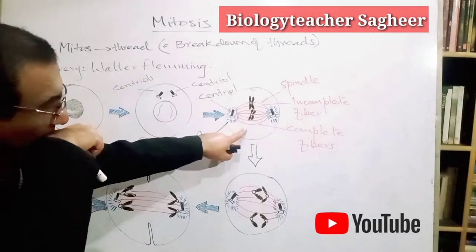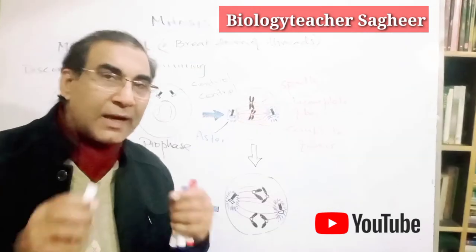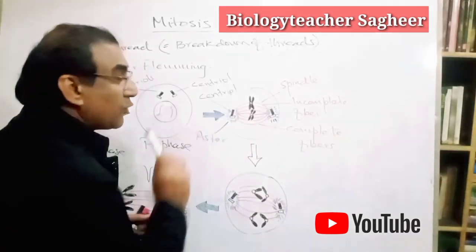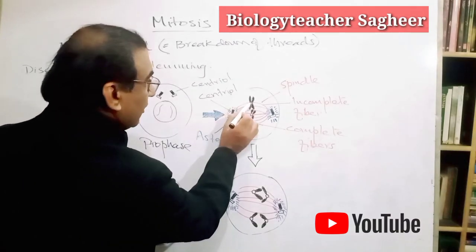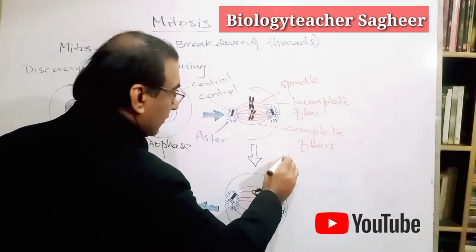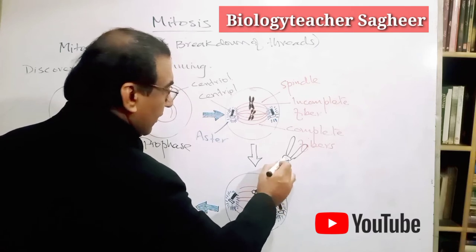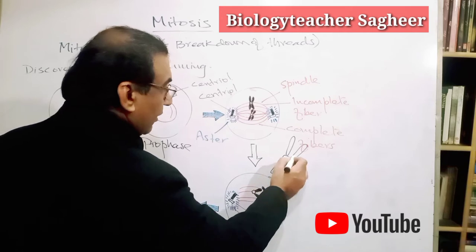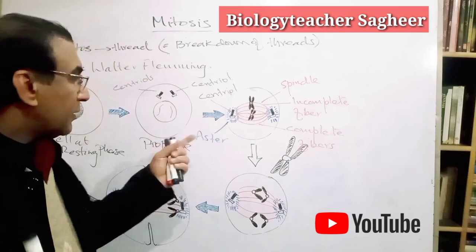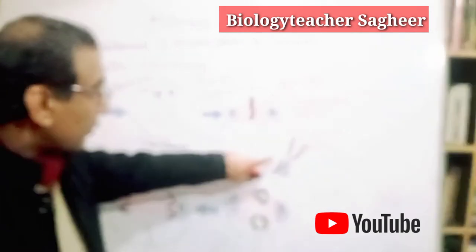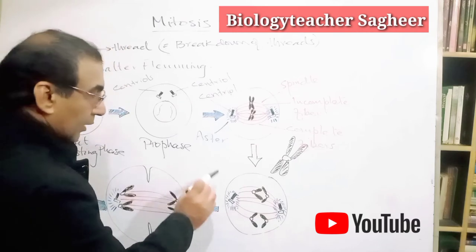Here you can see a chromosome possesses four chromatids attached with a single centromere. Here is the centromere, and here are the chromatids. You must know the chromatids, otherwise you won't be able to understand this process. The chromatids are attached with the single centromere.